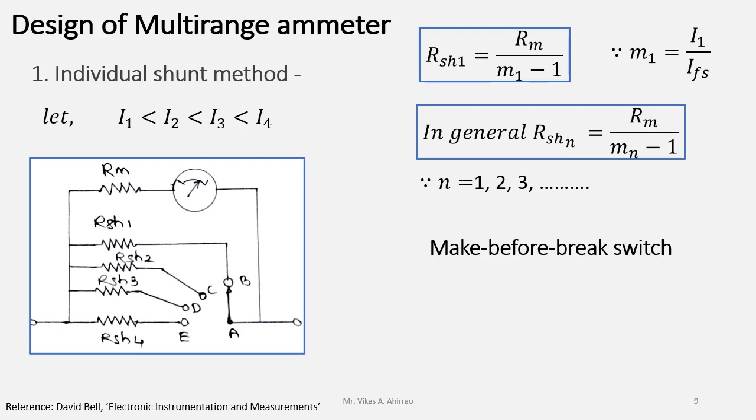During this small finite time, the current to be measured which is greater than the full scale current of the meter will flow through the meter as no shunt will be connected during this small finite time and hence, the high current than the capacity of the meter may damage the meter.